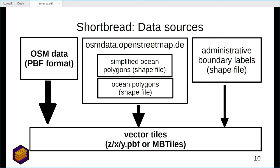The main data source is just an OSM extract in PBF format, but we also use two shapefiles from data.openstreetmap.de: a simplified ocean polygon shapefile and the ocean polygon shapefile. We also provide an additional shapefile for administrative boundary labels, which we once computed using Postgres, because TileMaker — which we use to generate the tiles — does not support a point-on-surface function. It only offers a centroid function, which is not suitable for countries with very distributed polygons, so you might end up with the label outside the country itself.